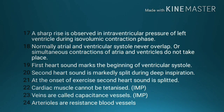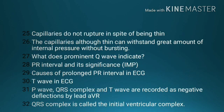Number 22, cardiac muscle cannot be tetanized. Number 23, veins are capacitance vessels. Number 24, arterioles are resistance blood vessels. Number 25, capillaries do not rupture in spite of being thin-walled. Number 26, the capillaries although thin-walled can withstand a great amount of internal pressure without bursting. Number 27, what does a permanent Q wave indicate? Number 28, PR interval and its significance. Number 29, causes of prolonged PR interval in ECG.